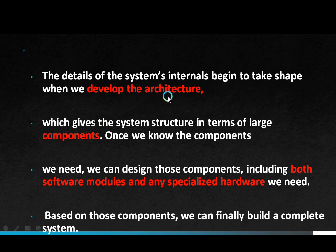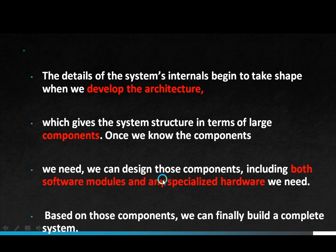Next, developing the architecture: the details of the system's internals begin to take shape. Architecture describes the overall structure of the embedded system. Then components give the system structure in terms of large components - identifying what components are being used. Finally, system integration: we design those components including both software modules and any specialized hardware needed, and based on all these we can build a complete embedded system.